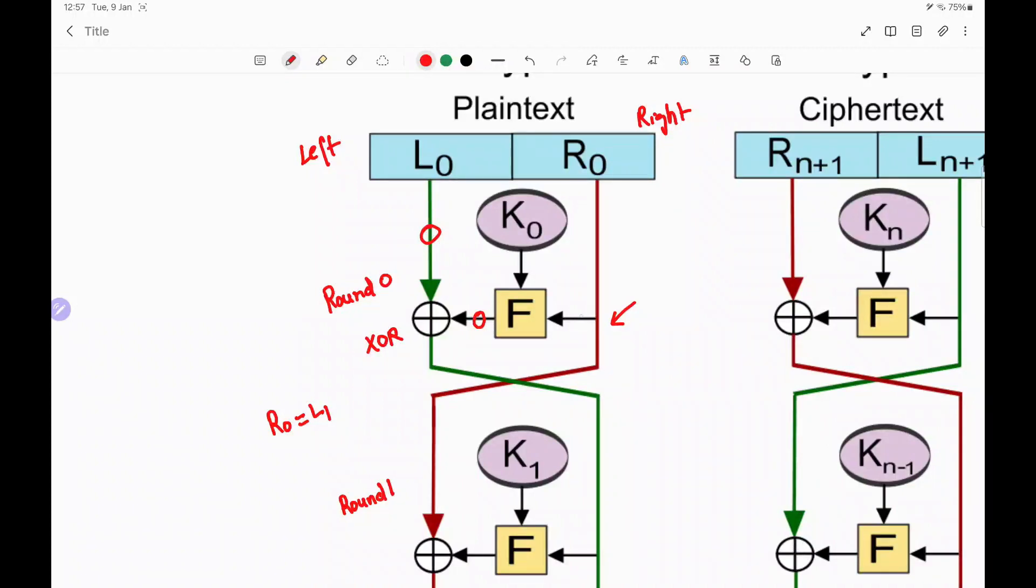So the function expects two inputs in each round. The first input is nothing but the current right half that is Rn. It may be R1, R2, R3, R16, whatever. So the current right half of the particular round along with the second input, which is the current key for that round. So to keep it simple, the function takes two inputs. First is R0, that is the right half of that round and the key corresponding to that round, K0.